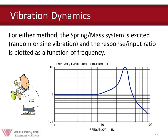In both cases the result is a transmissibility plot showing the response-to-input ratio on the vertical axis as a function of frequency on the horizontal axis. At low frequency, the response-to-input ratio is 1. As frequency increases, this system reaches a peak at about 30 Hz with a response of almost 10 times the input. As frequency continues to increase, the response attenuates, crossing below 1 at around 44-45 Hz and continuing to attenuate from that point on.